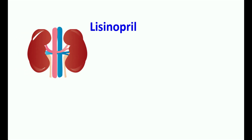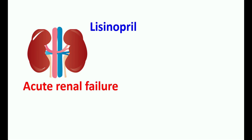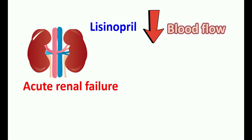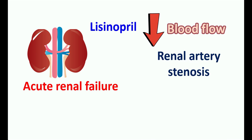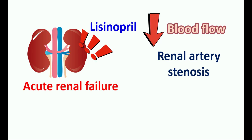Regarding renal function, lisinopril can affect the function of your kidneys. Since it acts on the renin-angiotensin system, it can affect how your kidneys function. In a few people, this medication can produce acute renal failure, particularly in people with pre-existing renal disorders or decreased blood flow to the renal system. In people with renal artery stenosis — the narrowing of blood vessels supplying the kidneys — lisinopril, as a vasodilator, can reduce perfusion pressure, reduce renal blood flow, reduce filtering capacity, and thereby induce acute renal failure.